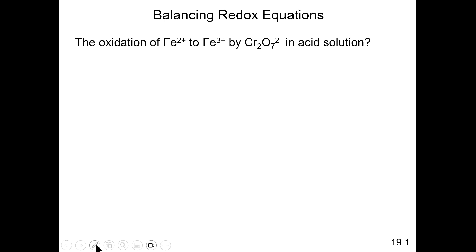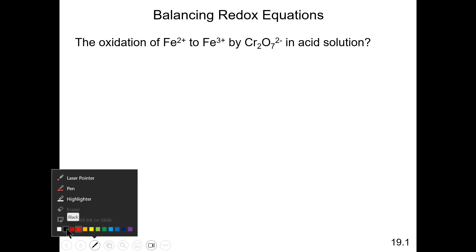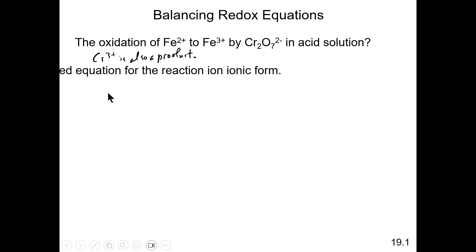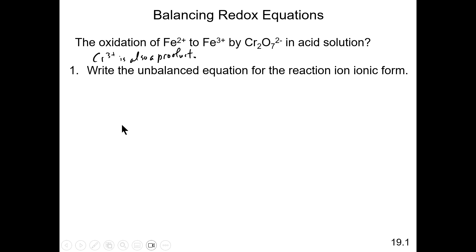Admittedly, there's some missing information here which it would not be fair for you to know, so let me add it here — that one of the products of the reaction would be Cr3+. So Cr3+ is also a product of this reaction, because you're going to need that in order to answer this question. So the first step is that we write an unbalanced equation, simply identifying the reactants and products and placing them in their proper places.